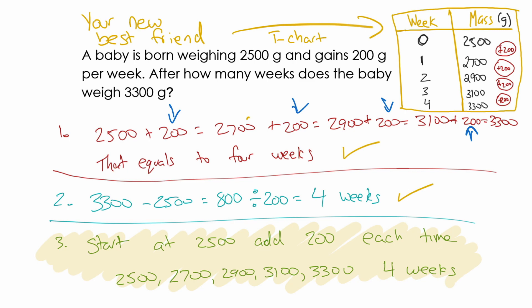And the last way, just like the previous slide, start at 2,500, add 200 each time. So then I asked my class to put it in a T-chart. And a T-chart is your best friend when it comes to early algebra. And this is what the T-chart looks like.